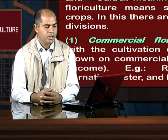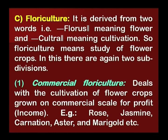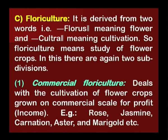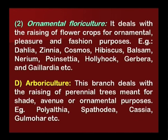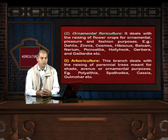Floriculture is derived from flores meaning flower and cultura meaning cultivation, so floriculture means study of flower crops. There are two subdivisions. First is commercial floriculture, which deals with the cultivation of flower crops grown on a commercial scale for profit — examples are rose, jasmine, carnation, aster, and marigold. Second is ornamental floriculture, which deals with the raising of flower crops for ornamental pleasure and fashion purposes — examples include dahlia, zinnia, cosmos, hibiscus, balsam, nerium, poinsettia, hollyhock, gerbera, and gaillardia. These flowering plants are grown for ornamental purposes.